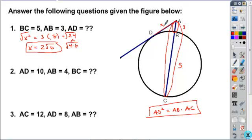Take just a couple minutes here, and see if you can answer questions 2 and 3. Talk through the solutions for this. So in the second problem, AD is 10, AB is 4, and we want to find BC, so I'll call this Y.